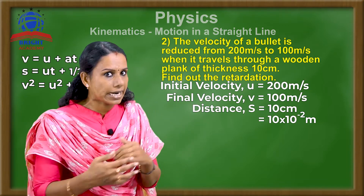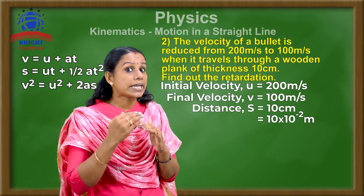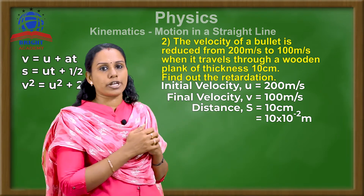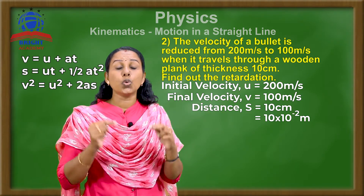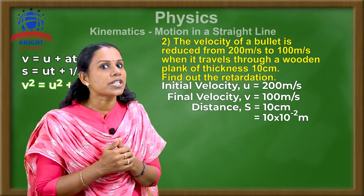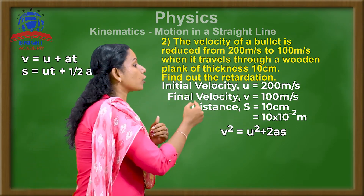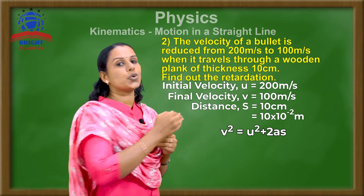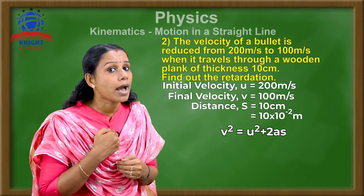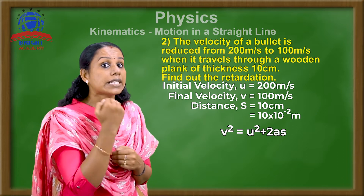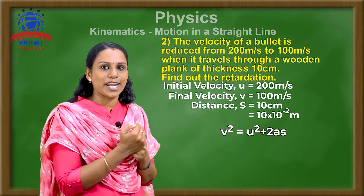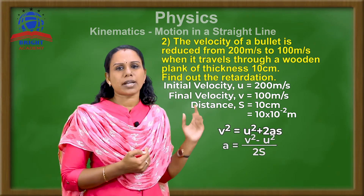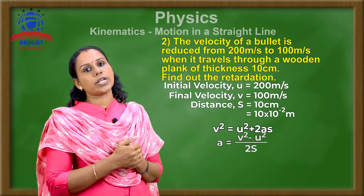Retardation means negative acceleration, so we have to calculate A. We have the quantities v, u, and S, but not time — so we use the third equation of motion: v² = u² + 2AS. Rearranging for A: A = (v² − u²) / 2S.